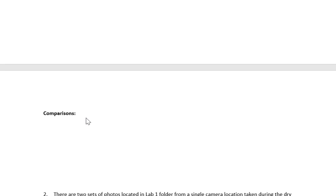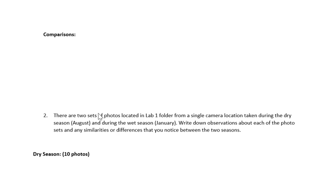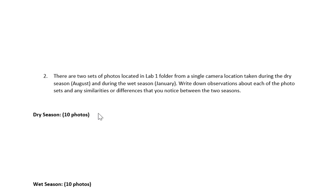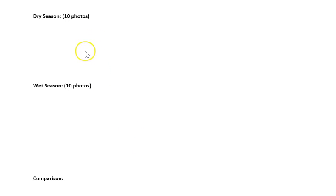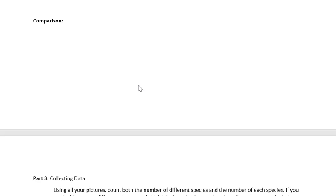Don't just tell me it's dark at night and light during the day — I already know that. You're going to compare the two based on details. Then you'll do the same thing but looking at different seasons: 10 photos from the dry season and 10 from the wet season. What are your observations for the dry season? What are your observations for the wet season? Then compare the two. You don't need to download these pictures — just open the files within Blackboard and scroll back and forth, looking at all pictures for each type or part of the year.